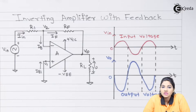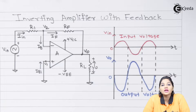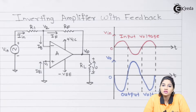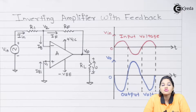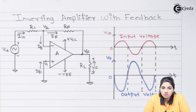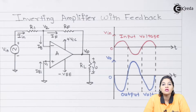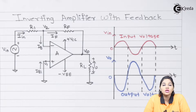We know that in order to implement an op-amp as an amplifier, we require negative feedback in the circuit. The negative feedback is provided so that the output and input are 180 degrees out of phase with respect to each other. The use of negative feedback in the circuit can control the gain, stabilizing it, which is very high in open loop configuration.